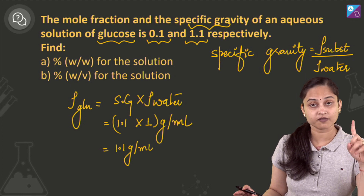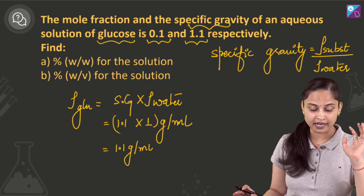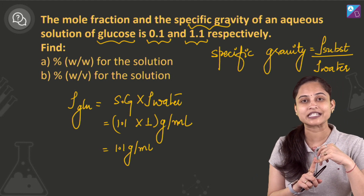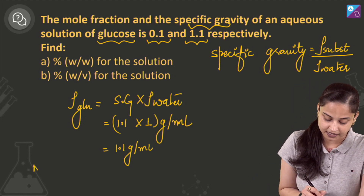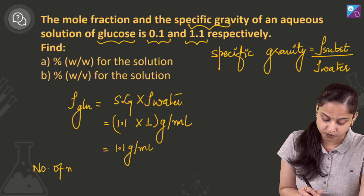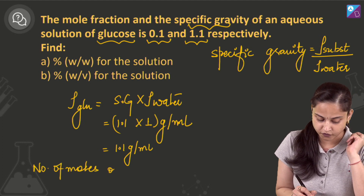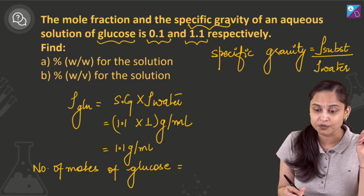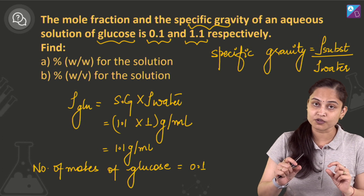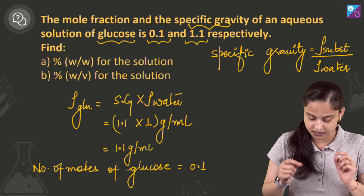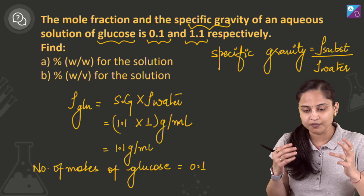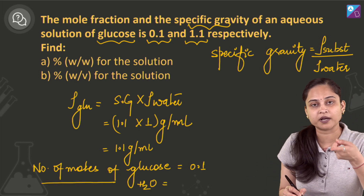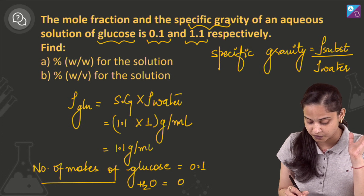We have also been given the mole fraction of the aqueous solution of glucose. If the mole fraction of glucose is 0.1, we can say the number of moles of glucose equals 0.1. Then the number of moles of water equals 1 minus 0.1, which comes out to be 0.9.